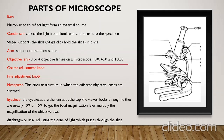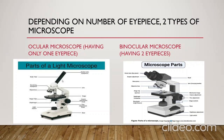If the objective lens is 10x and the eyepiece lens is 10x, then the magnifying power is 10x into 10x, that is 100x. There are two types of microscope depending on the number of eyepieces: monocular microscope and binocular microscope. The microscope containing only one eyepiece is called monocular microscope, and the one containing two eyepieces is called binocular microscope.